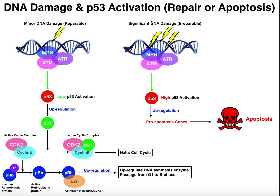In any case of DNA damage, regardless of whether it's minor or significant, we have proteins that are recruited to the site of the DNA damage. The first one is a protein called MRN. MRN is going to recruit other proteins such as ATM and ATR. Depending on the cell type, you're also going to have other proteins such as BRCA2. But these are the major ones that are initially going to get recruited.